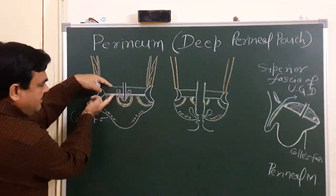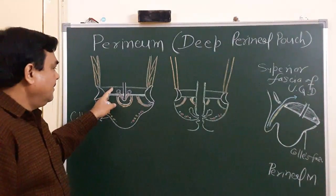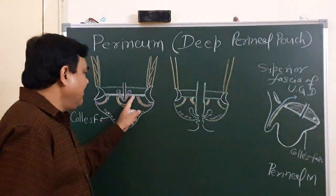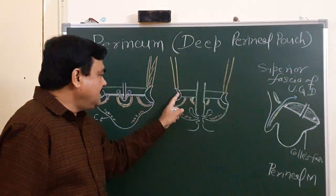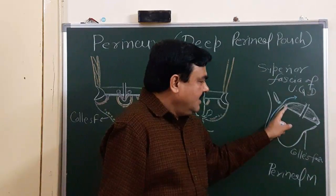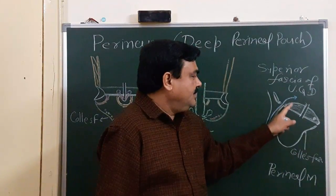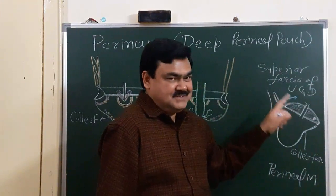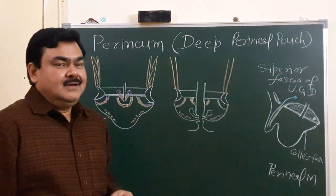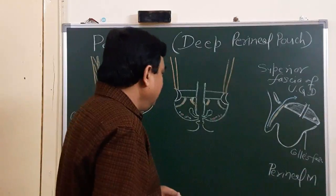The deep perineal pouch extends from here to here. The boundaries are: superiorly by the superior fascia of the urogenital diaphragm, inferiorly by the perineal membrane, on each side by the ischiopubic ramus, and anteriorly and posteriorly it is closed by joining the superior fascia and inferior fascia together. That is the boundary of the deep perineal pouch. Now, the contents of the deep perineal pouch.